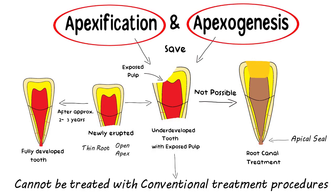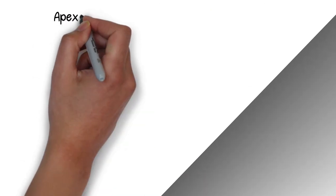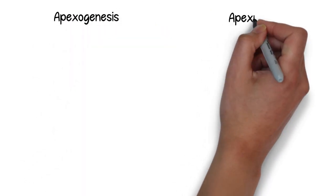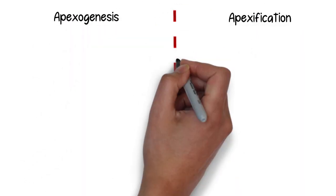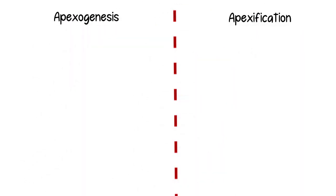Apexification and Apexogenesis are two procedures that have been advised to overcome this problem and save this underdeveloped tooth from getting extracted. In this video, I will be discussing both of these procedures side by side.